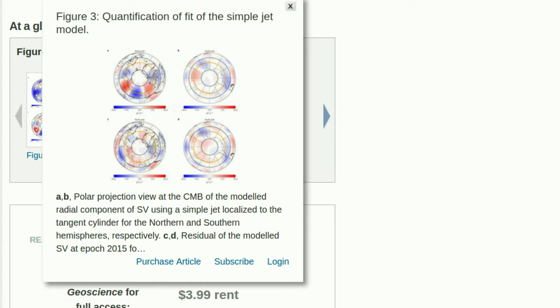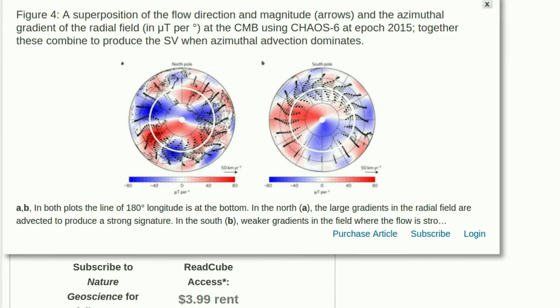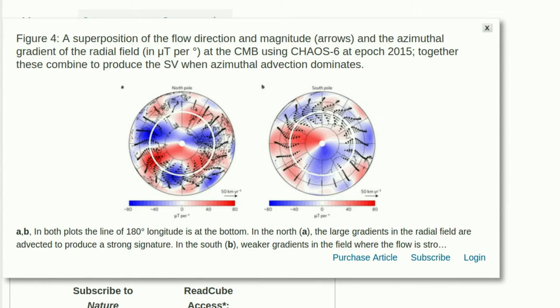Lead researcher Phil Livermore explained the discovery as an accelerating band of molten iron circling the North Pole like the jet stream in the atmosphere.